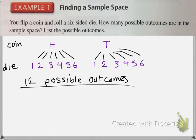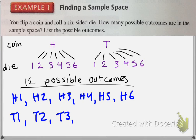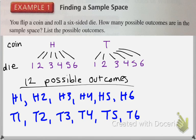So if you wanted to list out those outcomes, you could use the little trees we just formed. So it could be H1, H2, H3, H4, H5, H6. And the same thing for tails: T1, T2, T3, T4, T5, T6. So there are 12 possible outcomes, and here's a list of all the outcomes within your sample space.